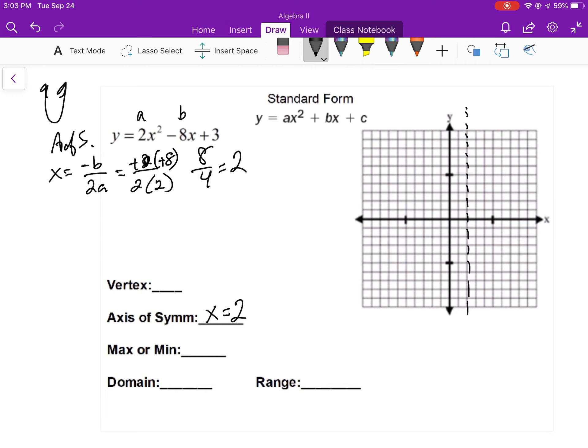To find the vertex, I'll go and I'll put, because that is half of your vertex, 2 into the equation. So 2 squared, 4 times 2 is 8, minus 16, plus 3, negative 8 plus 3 is minus 5. So my vertex is down there.